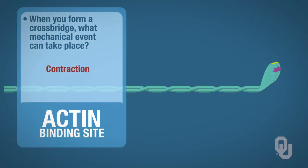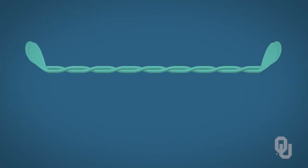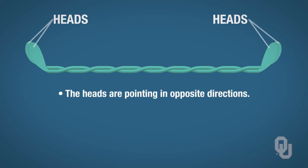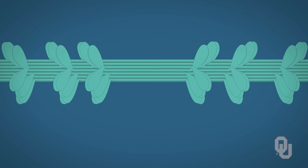That is the basic scenario for one myosin molecule, one thick filament. In reality, let's take a look at what happens when a second myosin molecule is joined. Notice the direction of the heads for each of these molecules — the heads are pointing in opposite directions. Because if you visualize the heads moving straight up and binding to the thin filament, then cocking inward, when they cock inward, that shortens the muscle. Now the thick filament is actually more complicated than that, because this is physiology. Look at how many myosin molecules make up a thick filament.